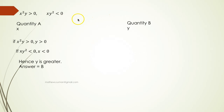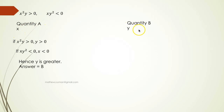This is another comparison problem. Given x squared y greater than 0 and xy squared less than 0, we need to compare quantity A, which is x, and quantity B, which is y. Now the square of a number cannot be negative, so if x squared y is greater than 0, then y has to be positive.